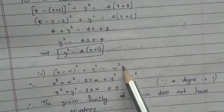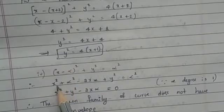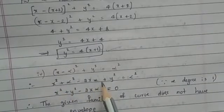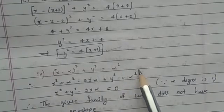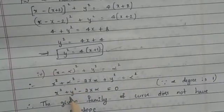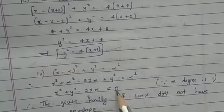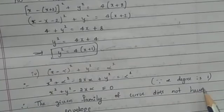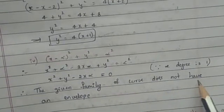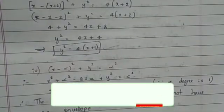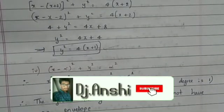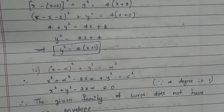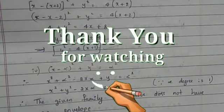Next problem: (x−α)² + y² = α². Expanding: x² + α² − 2xα + y² = α². The α² terms cancel, leaving x² + y² − 2xα = 0. Since α appears only to the first degree, the given family of curves does not have an envelope. That covers the method of finding envelopes. If you have any doubts, please ask in the comment section. If you liked the video, please like, comment, share, and subscribe. Thank you for watching.